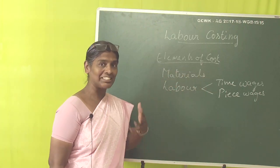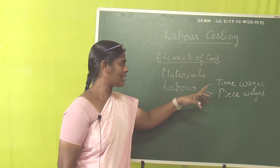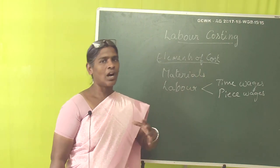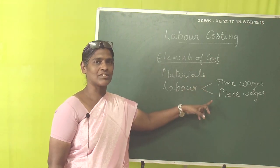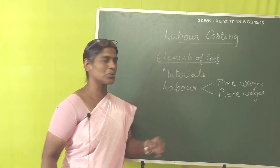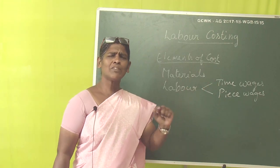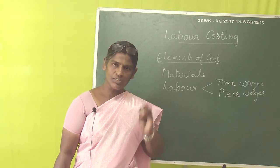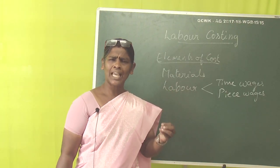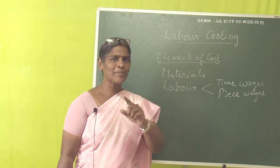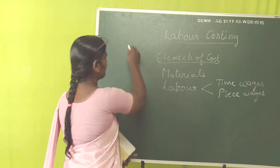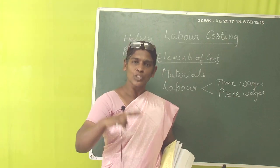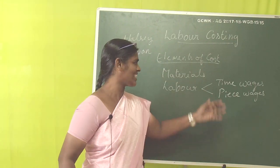There are not only just time wages and piece wages — there are also advancements and differentiations within each. In time wages, there are certain different methods. Scientists and economists Halsey and Rowan each prepared their own models to differentiate time wages. They fix a standard time for a work — for example, assembling a table should take 30 minutes.